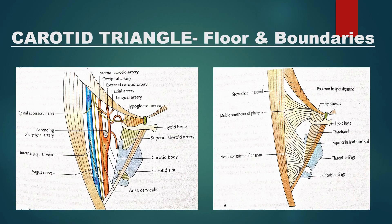Our very first topic will be the carotid triangle. In our first part, we already discussed the importance of the posterior triangle. In this part, we will discuss the next triangle frequently asked in profs and terminals — that is the carotid triangle. For the carotid triangle, we will cover the introduction, boundaries, contents, and clinical features. In boundaries and contents, we can add two diagrams. Please mark this topic as an important one — it can come in your long note.